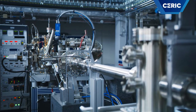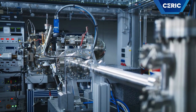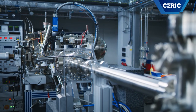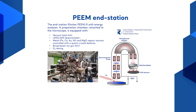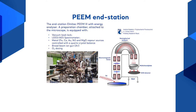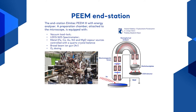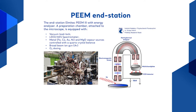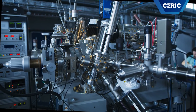Photoemission Electron Microscopy is a specialized technique for advanced studies of morphology, electronic and chemical properties, but also can probe magnetic structure of surfaces, thin films and interfaces with spatial resolution at the nanometer scale. X-ray absorption spectroscopy, X-ray magnetic circular and linear dichroism, and X-ray photoelectron spectroscopies are implemented with a lateral resolution of tens of nanometers.